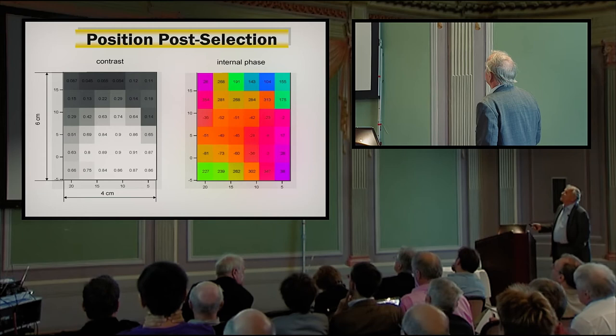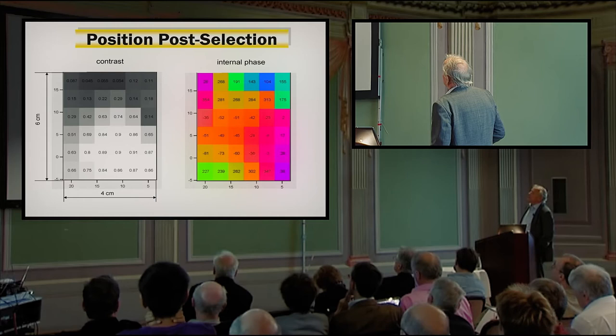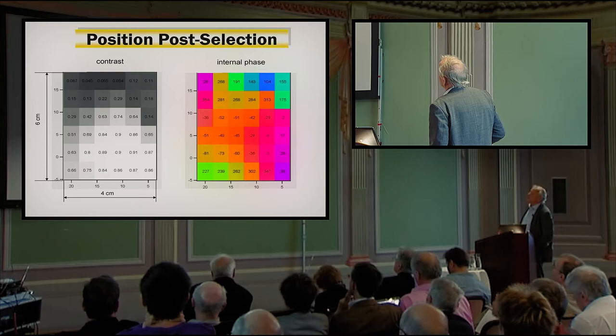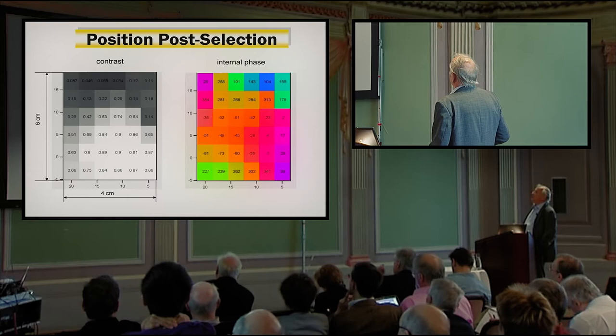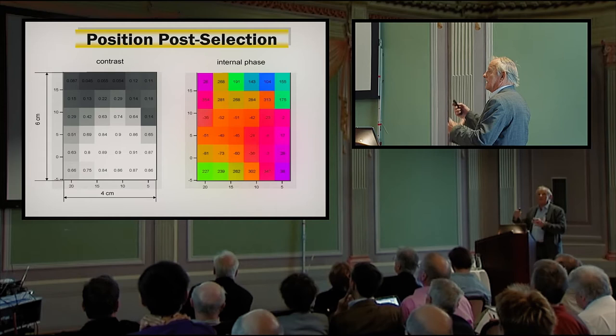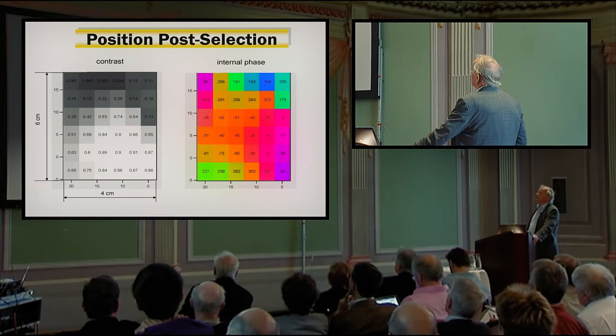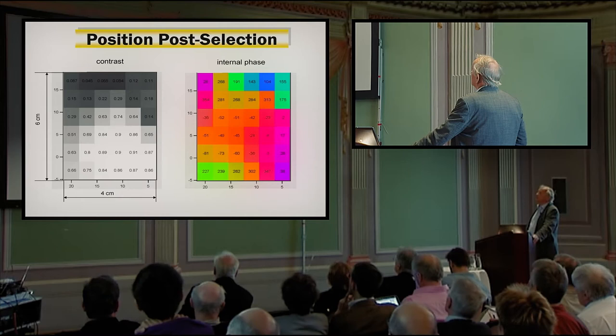Look, when you really scan the whole beam cross-section, you see that the contrast is quite different in any places, and what you usually measure is the average of it. And so there's quite a difference. Or here is the internal phase, which is always existing in any setup, and you see that it's varying also, and you are measuring the average, but you can get much more information by post-selection.